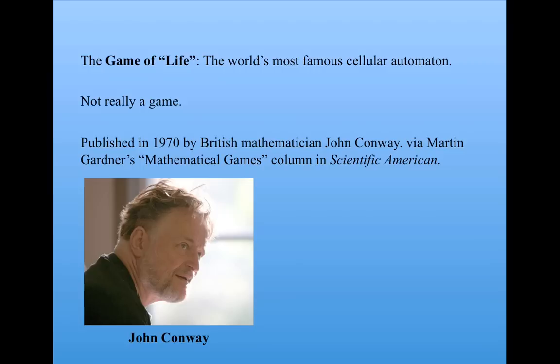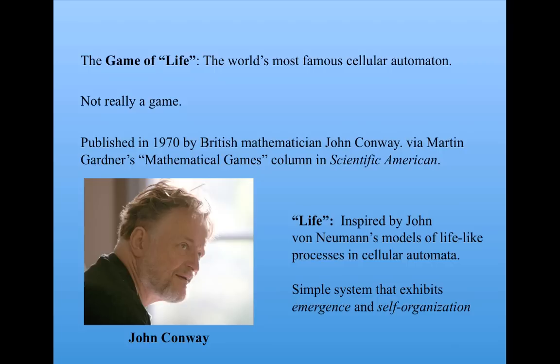The reason John Conway called it life was that it was inspired by John von Neumann's models of lifelike processes and cellular automata, which we'll talk about in a little while. In short, what Conway wanted was a simple system that exhibits emergence and self-organization. The Game of Life was what he came up with.